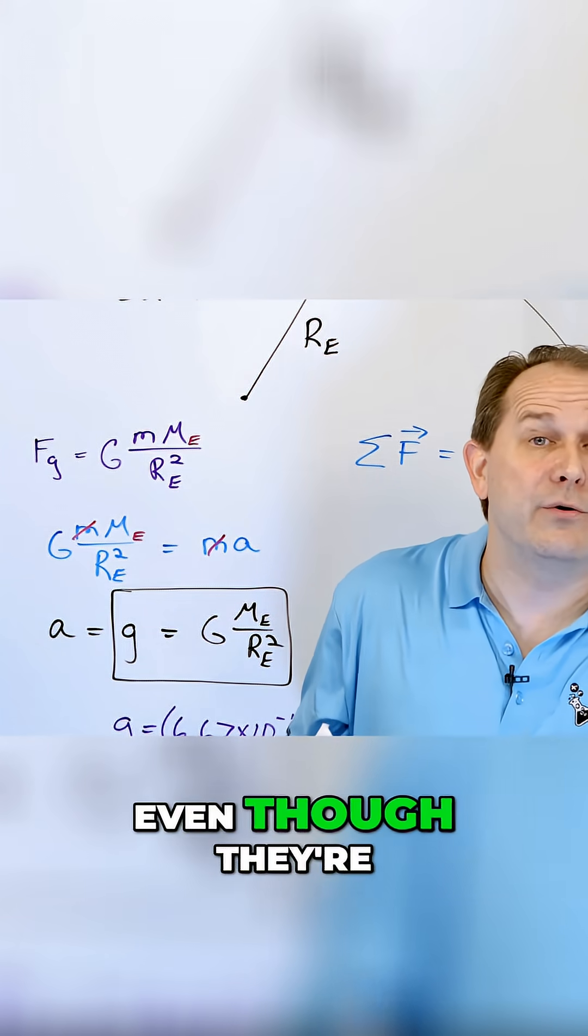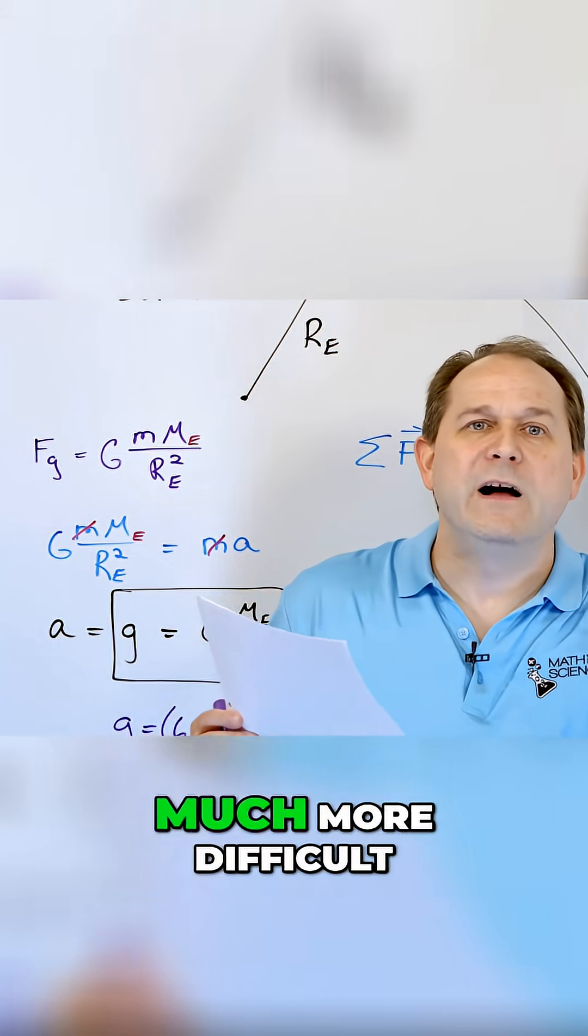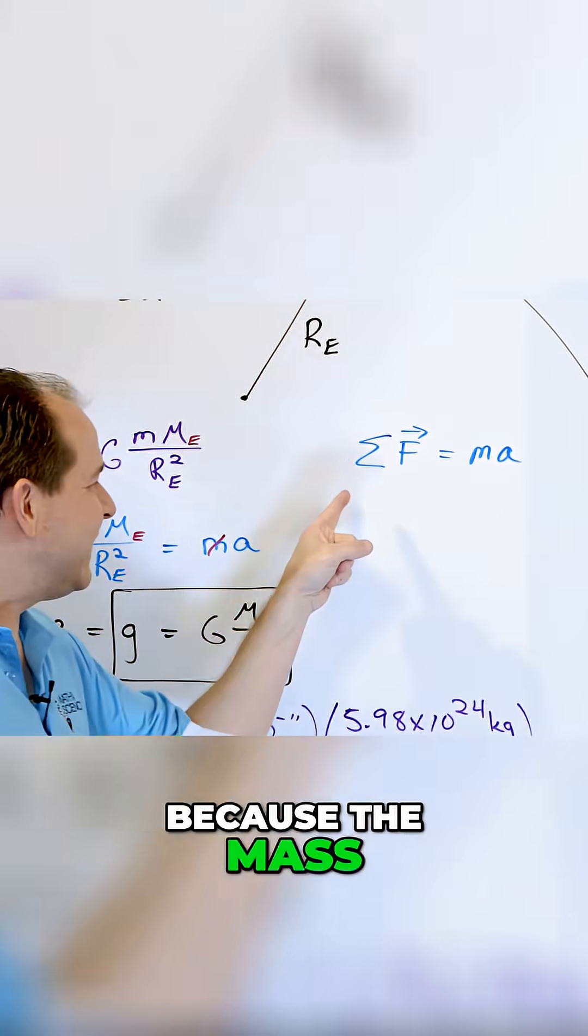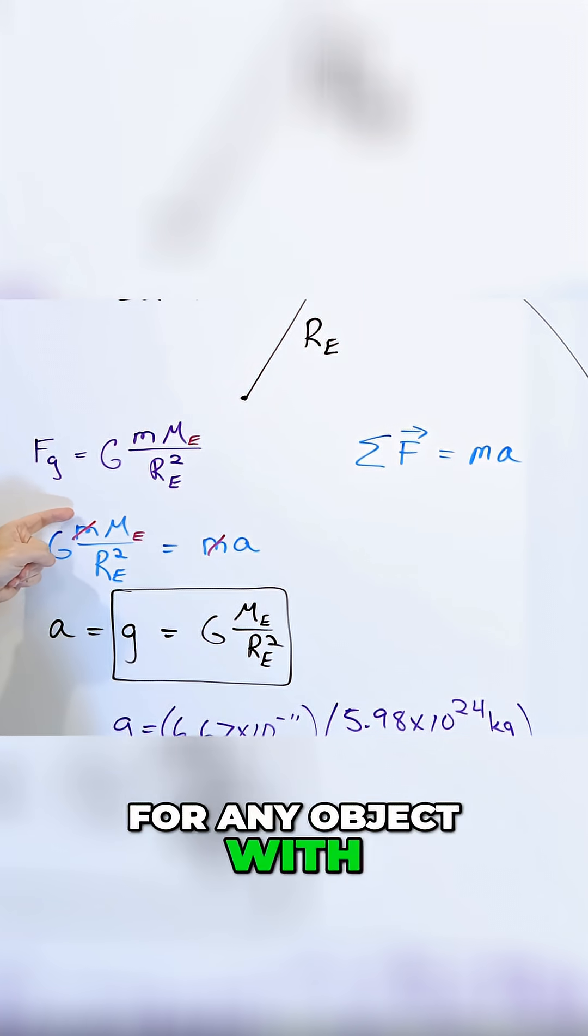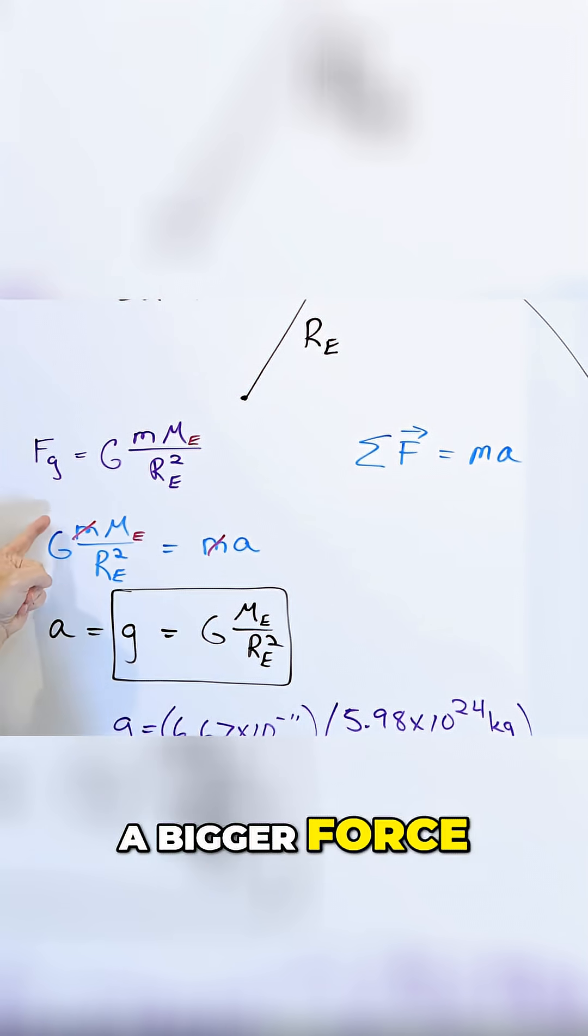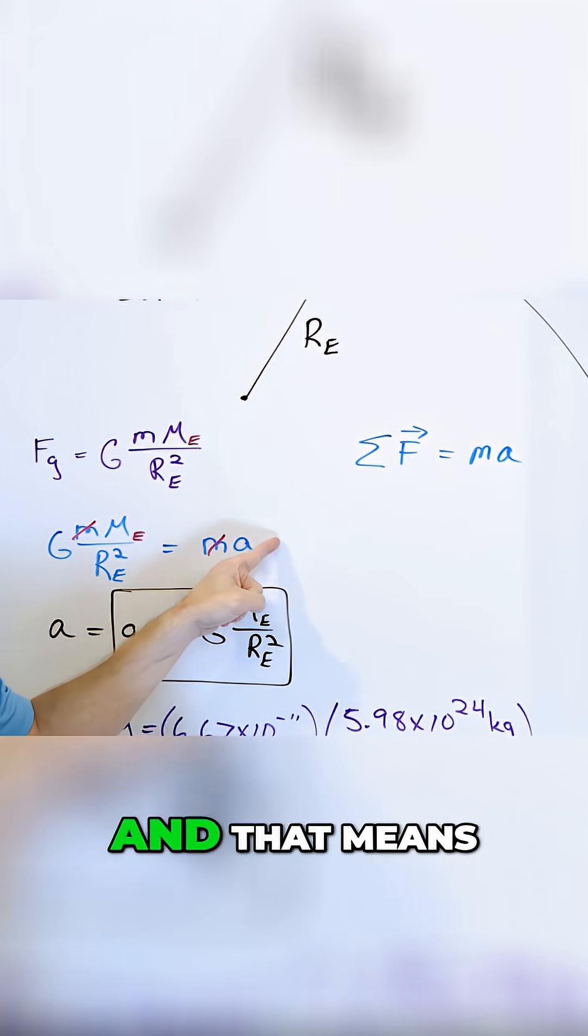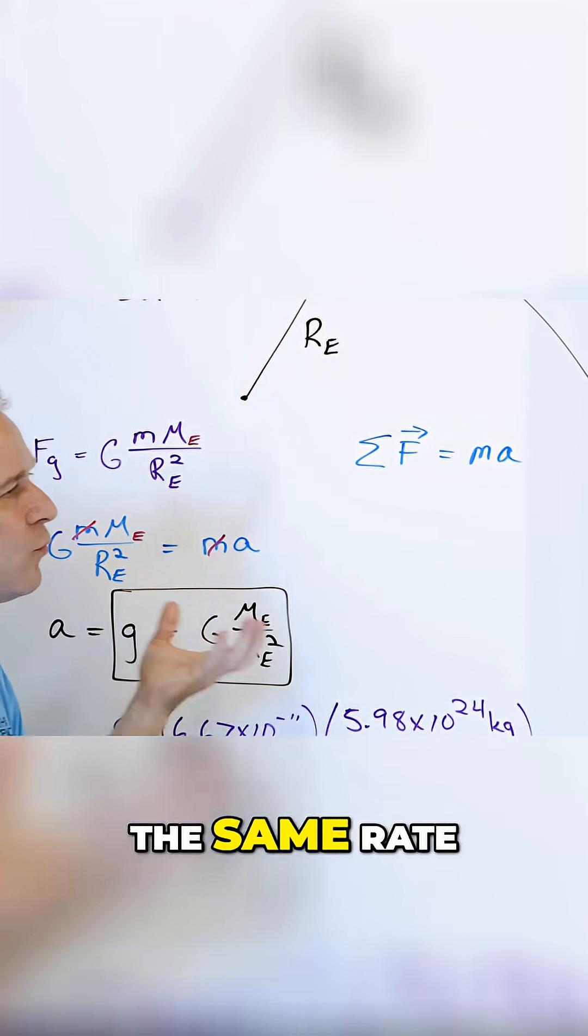However, even though they're being pulled harder than the marker, they're also much more difficult to get moving because of their increased mass. Because the mass is existing on the right-hand side and on the left-hand side, for any object with a very big mass, you're going to get a bigger force, but any object with a big mass is going to also have a big mass over here. And that means it's going to take much more force to accelerate it at the same rate.